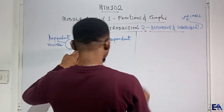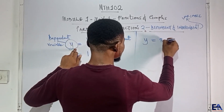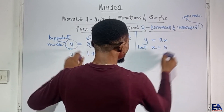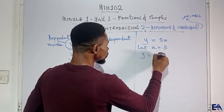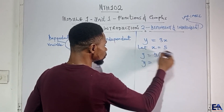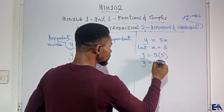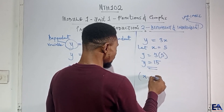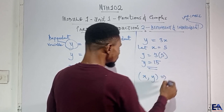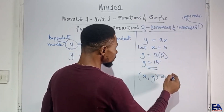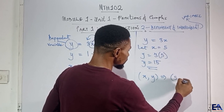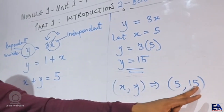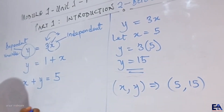So for y equal to 3x, if we let x equal 5, then y equals 3 times 5, which is 15. So if you have an ordered pair (x, y), it means we have the values (5, 15), telling us that when x is 5, y is 15.